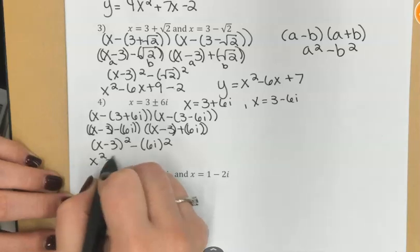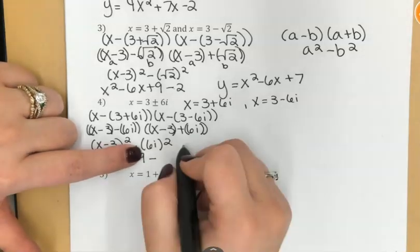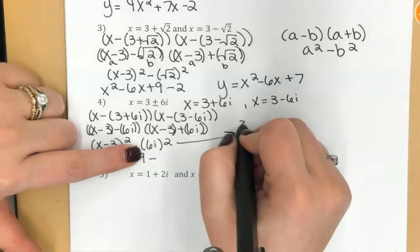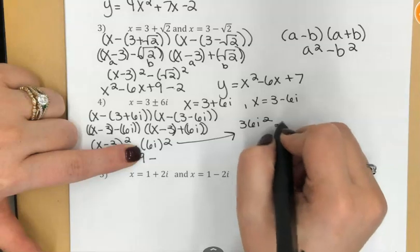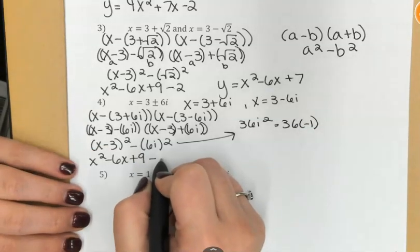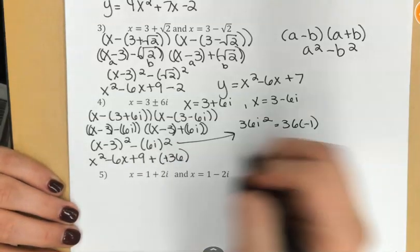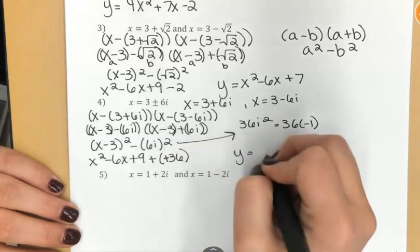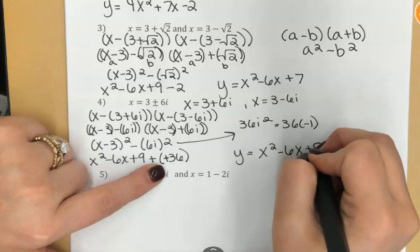To break this all out, x squared minus 6x plus 9 again, minus, now if I square 6i, that's going to give me 36i squared. And remember, i squared is negative 1. So this is really minus negative 36. So that's going to become plus. And my final quadratic will be x squared minus 6x plus 45.